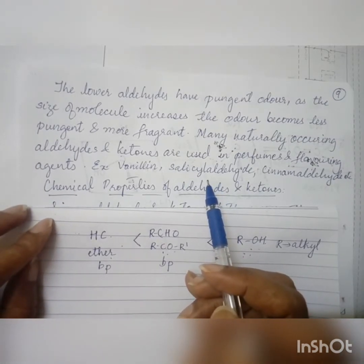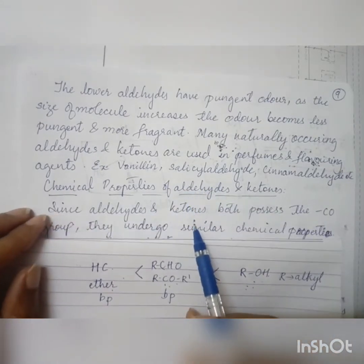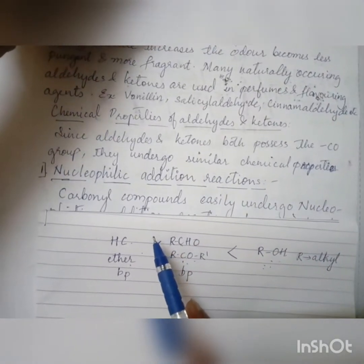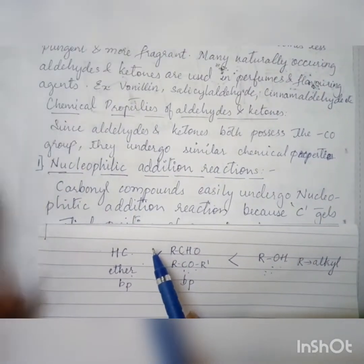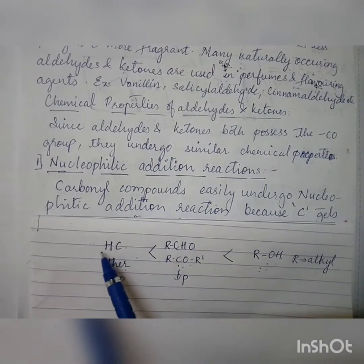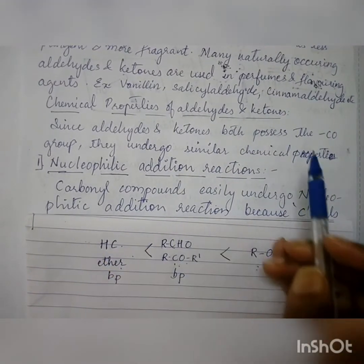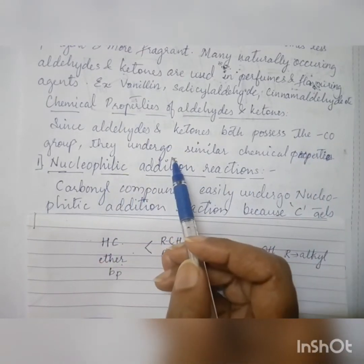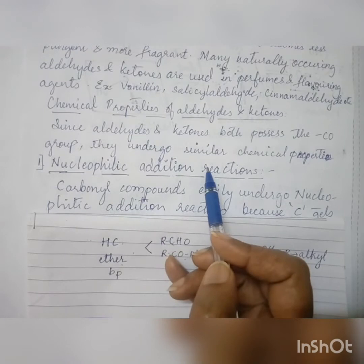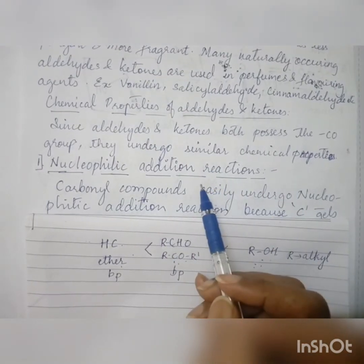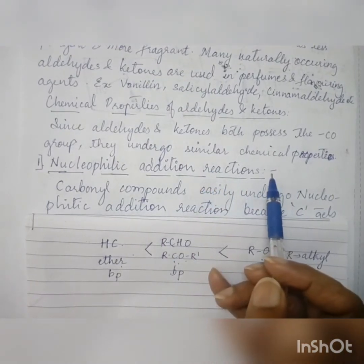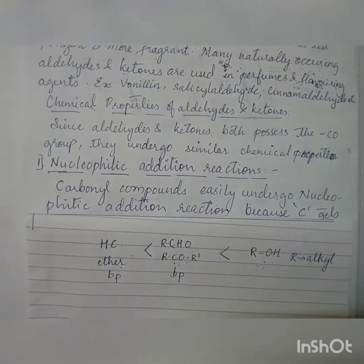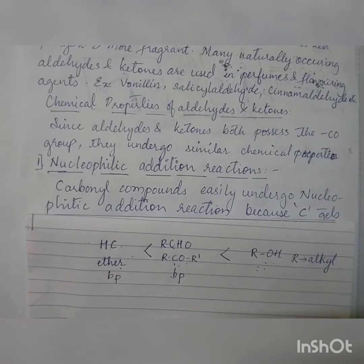Next, we are going to study the chemical properties of aldehydes and ketones. Because both aldehydes and ketones have the carbonyl group (C=O), they undergo similar types of chemical reactions. In general, we call them carbonyl compounds.